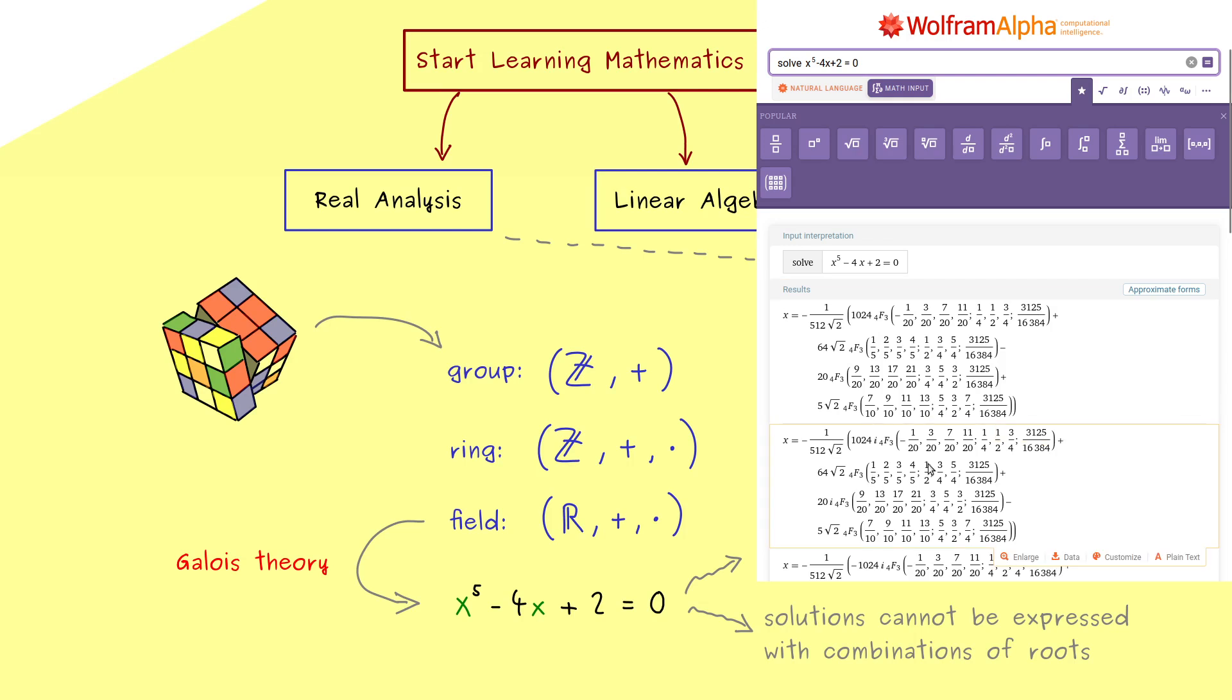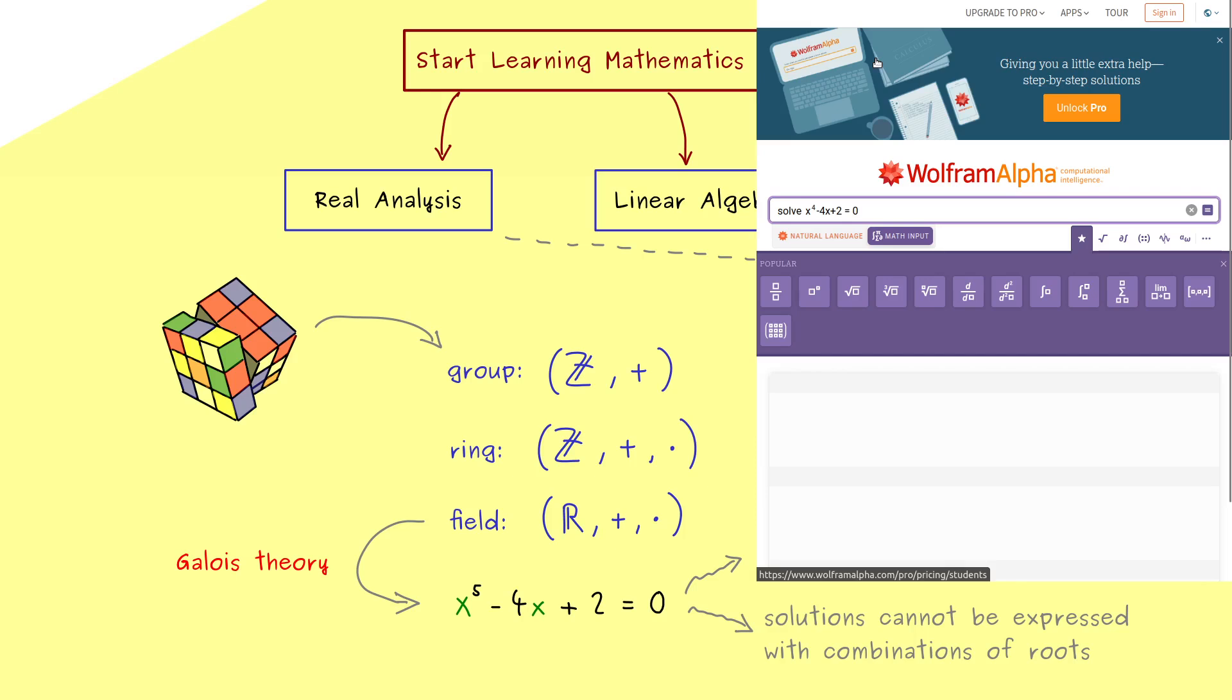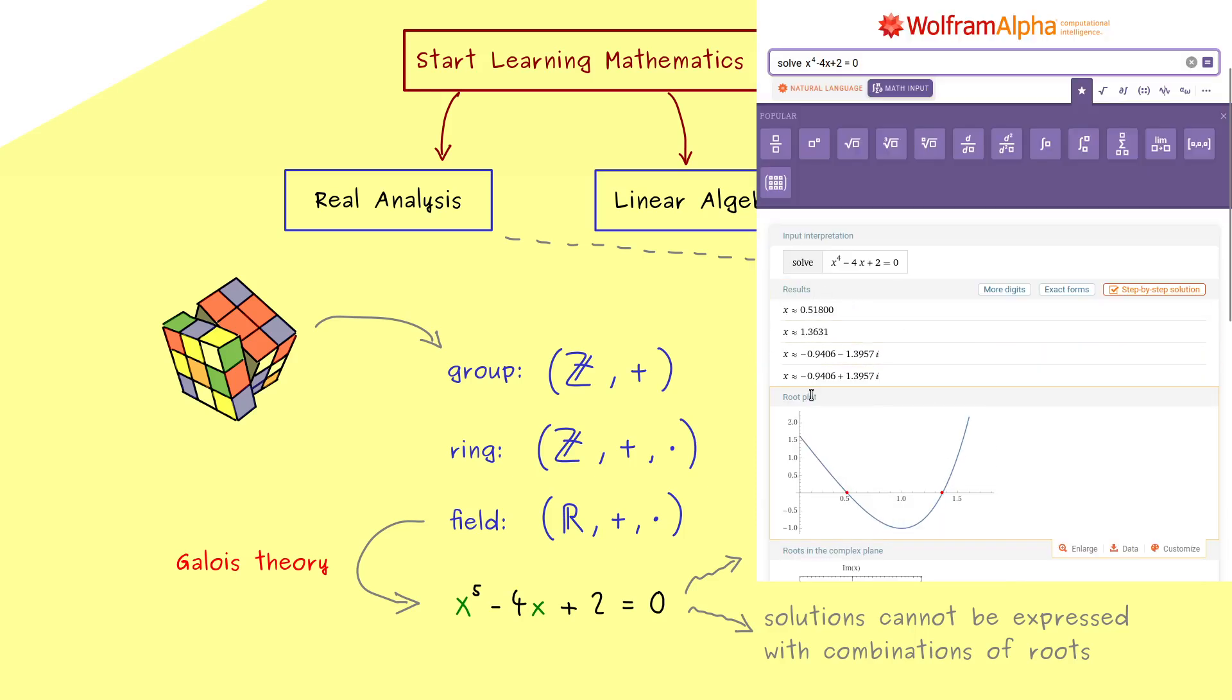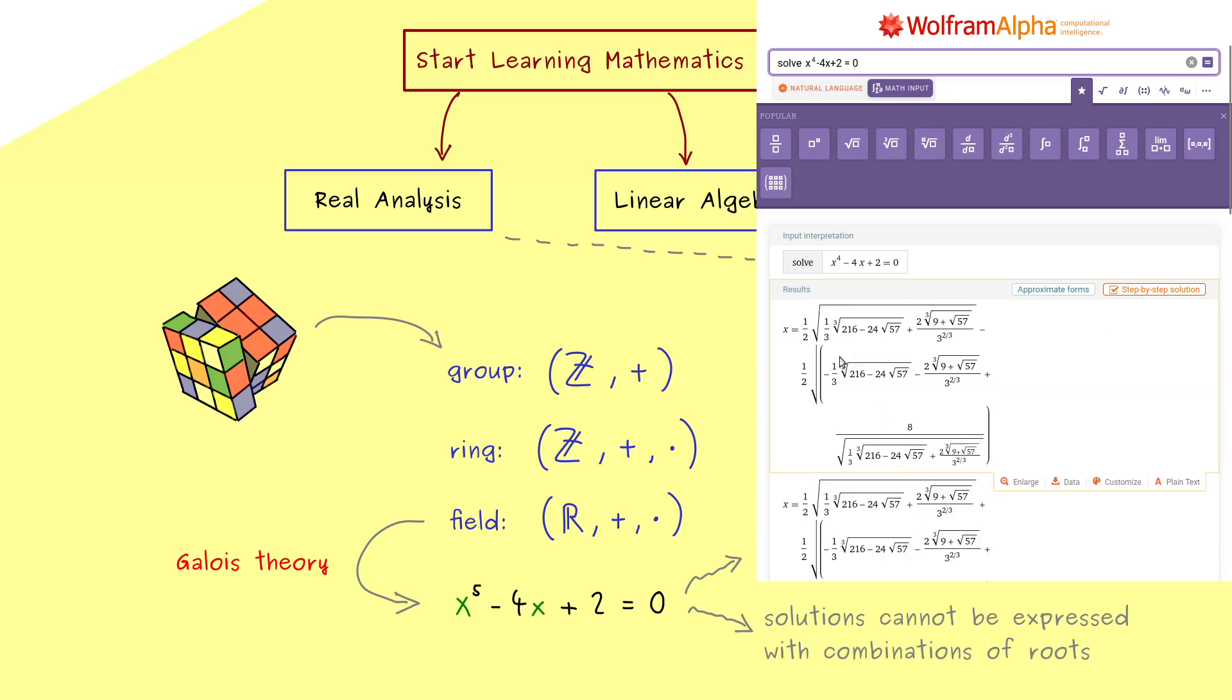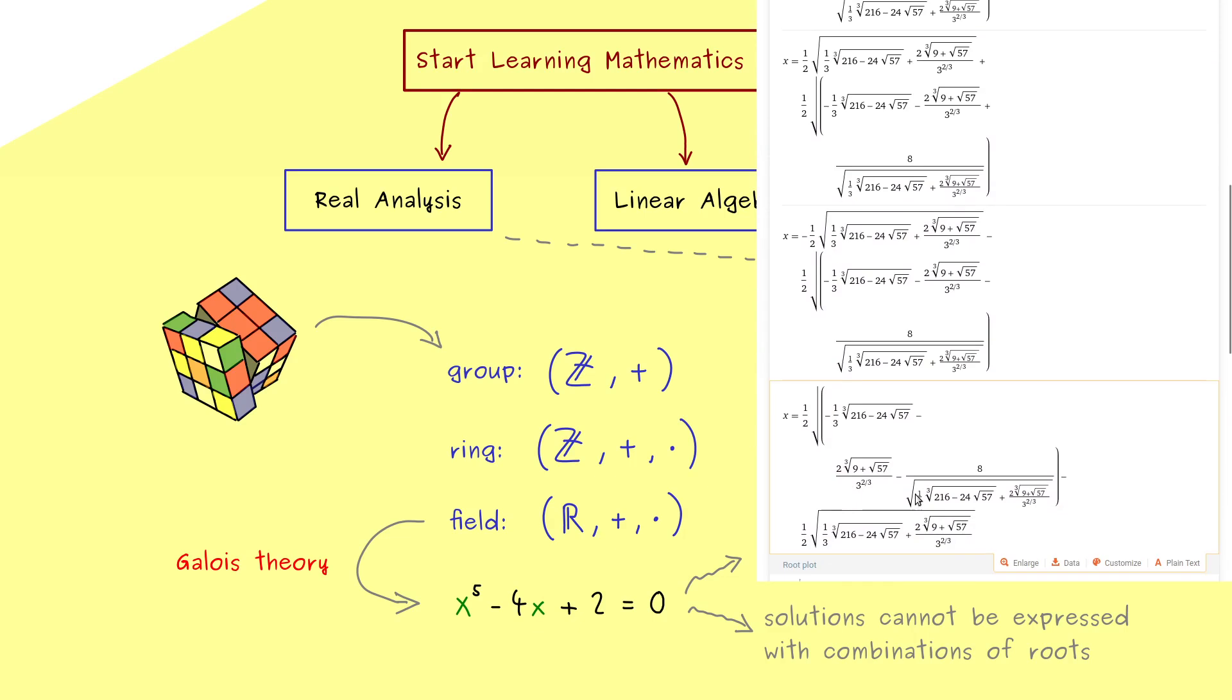And at this point it might be helpful to compare this to an equation with degree 4. So let's change the power to 4 and let's see what we get. Again we just get approximations but now let's see what the exact forms are. And there you see now we can use integers, roots of higher degree and just the basic calculation operations to formulate this solution. And indeed this formula with roots works for each of the 4 solutions. And the reason why we have this nice fact the Galois theory will tell us later.